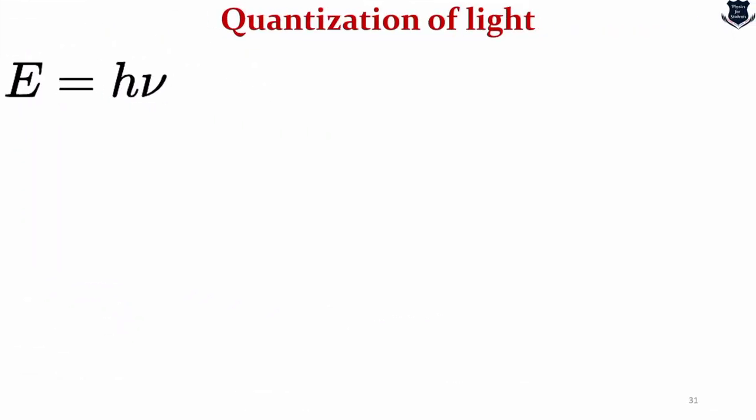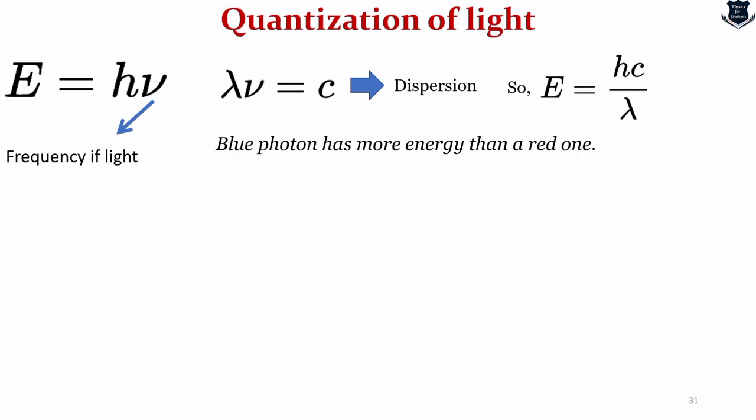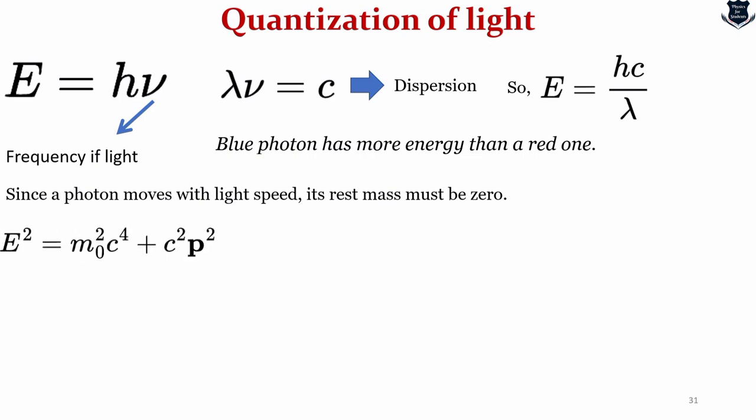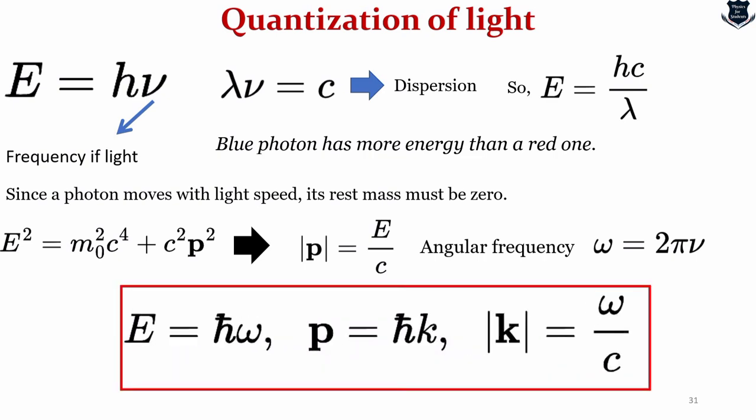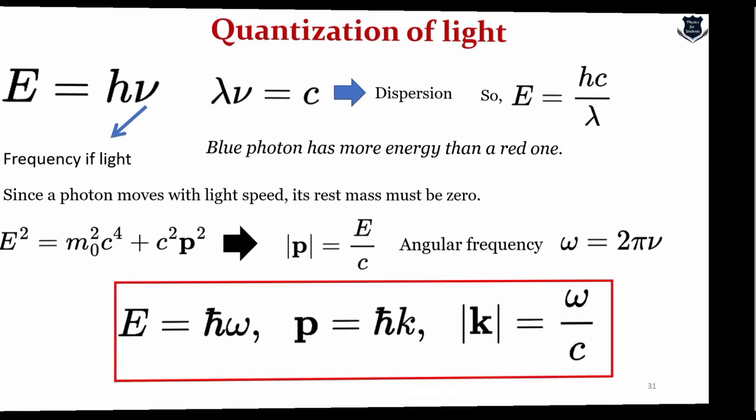As we know E equals hν where ν is the frequency of light. Then we can say that the wavelength λ and the dispersion relation can be well given by λν equals c, and from here obviously we can change the equation and we get E equals hc upon λ. This means that a blue photon has more energy than a red one, and we know the photon actually moves with the speed of light, its rest mass must be zero. From this particular equation, if we introduce the angular frequency ω equals 2πν, then we get this formula for energy E and the momentum vector of the photon P.